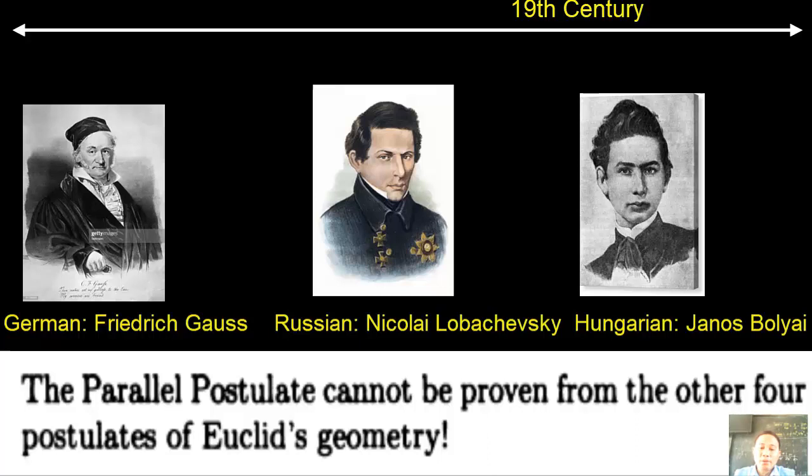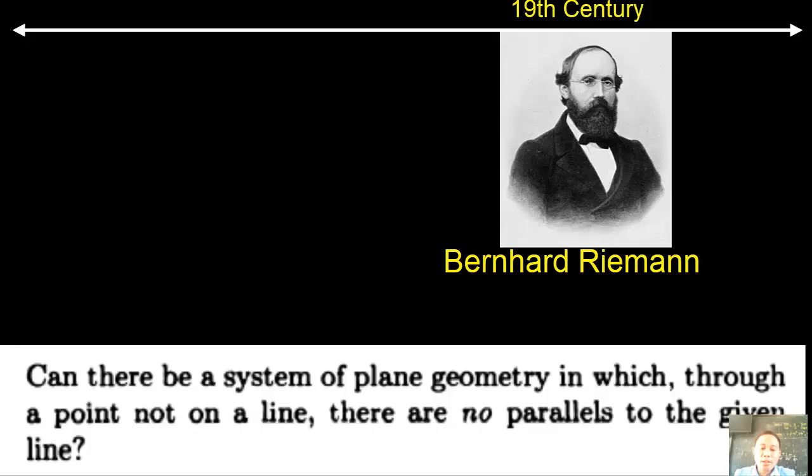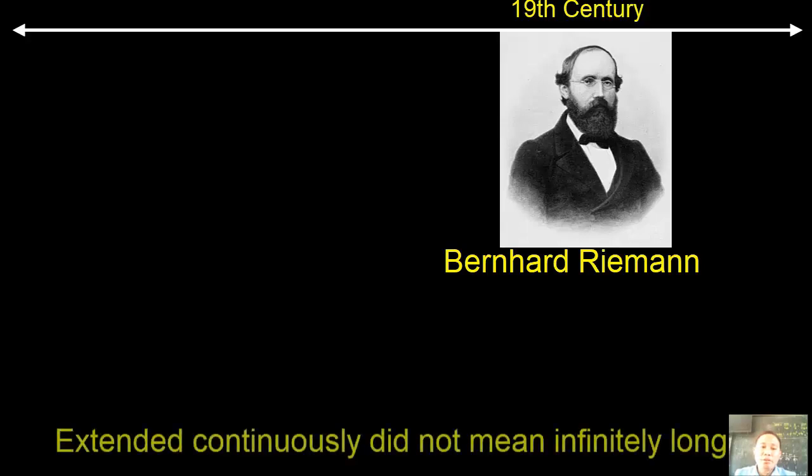It was the 19th century, following the footsteps of Saccheri. Bernhard Riemann wondered, looking at part 1 of the negation of postulate 5: can there be a system of plane geometry in which through a point not on a line, there are no parallels to the given line? Riemann observed that extended continuously did not necessarily imply infinitely long. In a circle, an arc of a circle can be extended continuously, but its length is finite.